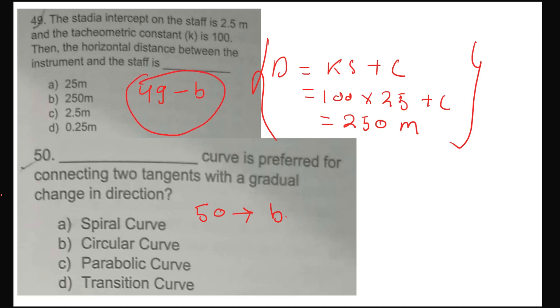Using the formula D = ks + c: D = 100 × 2.5 plus the additive constant. The multiplying constant is given, so the answer comes out to 250 meters. Getting the point?